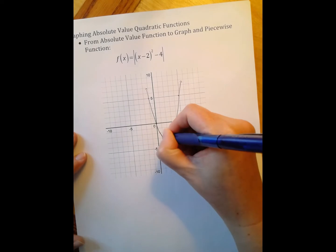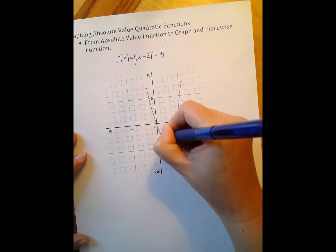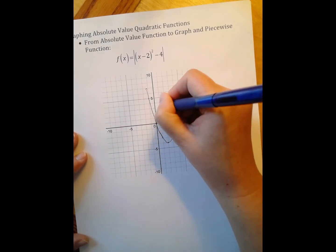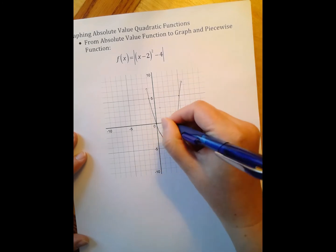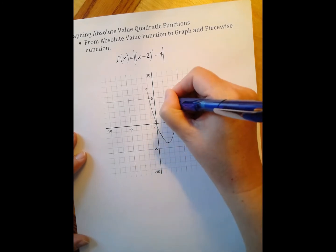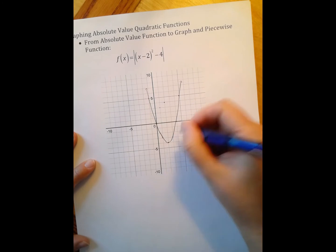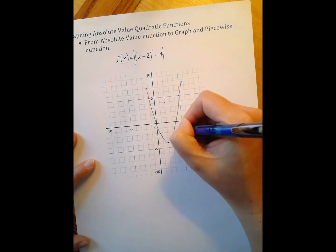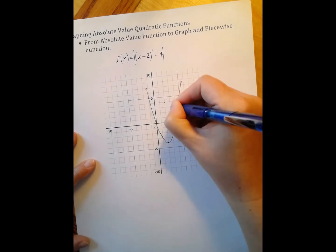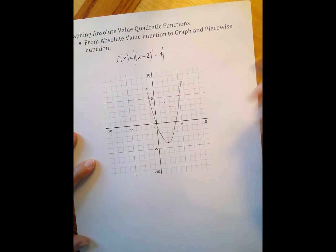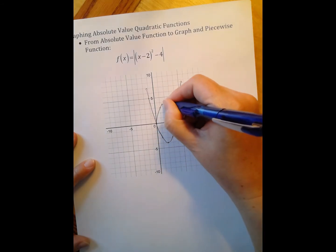So this positive 1, negative 3 becomes positive 1, positive 3. The positive 2, negative 4 becomes positive 2, positive 4. And the positive 4, sorry, positive 3, negative 3 becomes positive 3, positive 3. And then I connect.